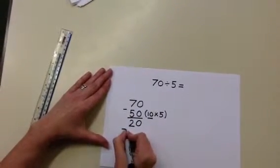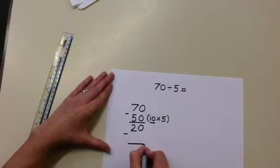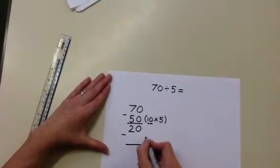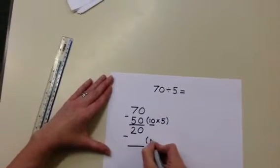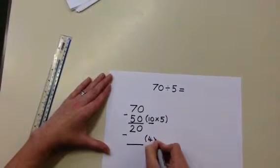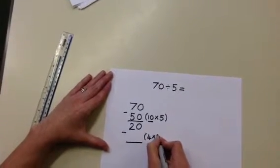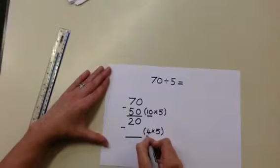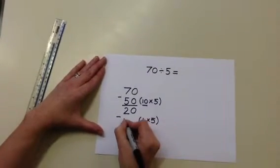And we are going to take away more groups of 5. Using our multiplication knowledge we know that 4 groups of 5 is 20. So in brackets again we record that sum, underlining the 4 to show how many groups of 5 we are taking away.